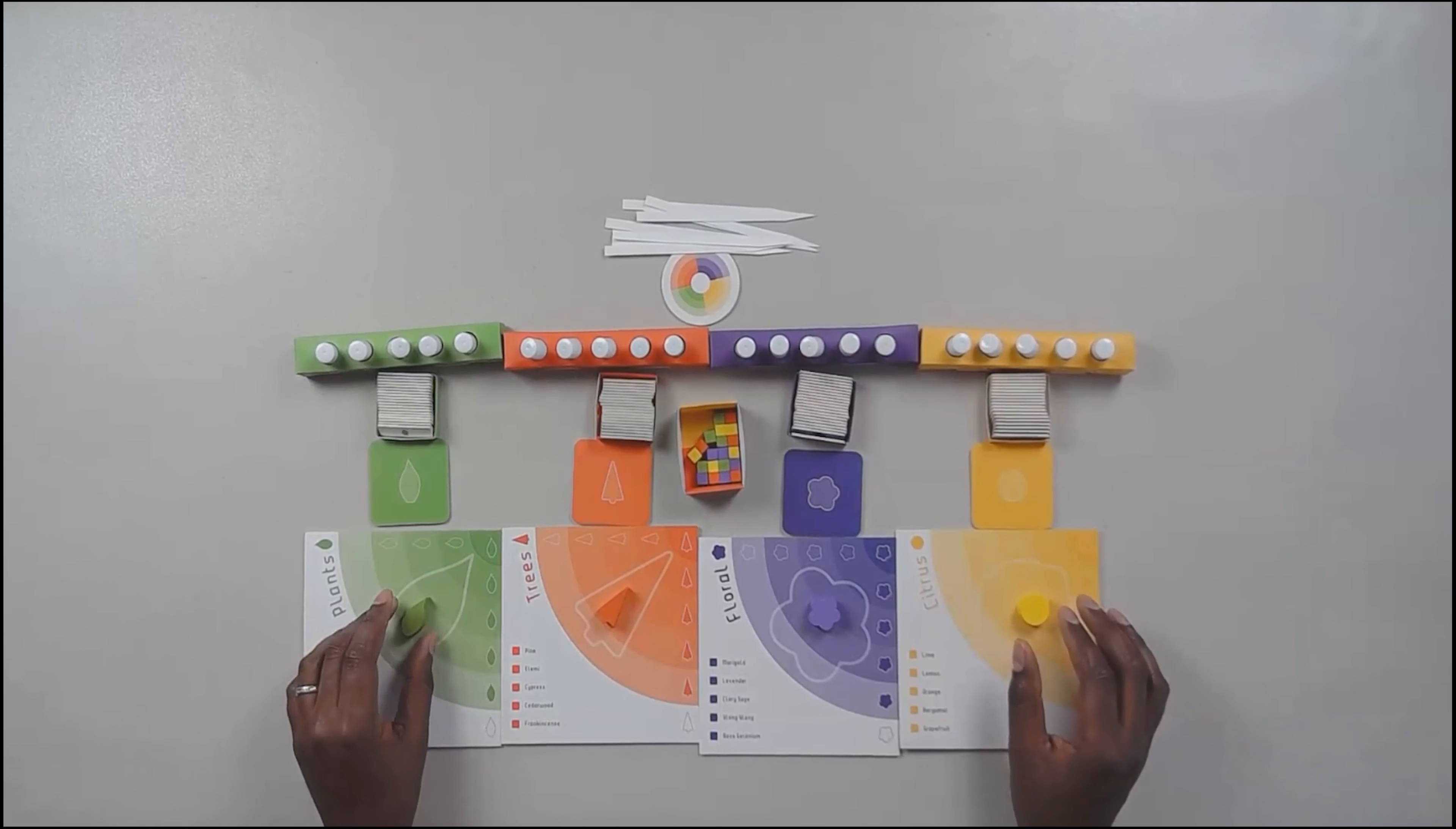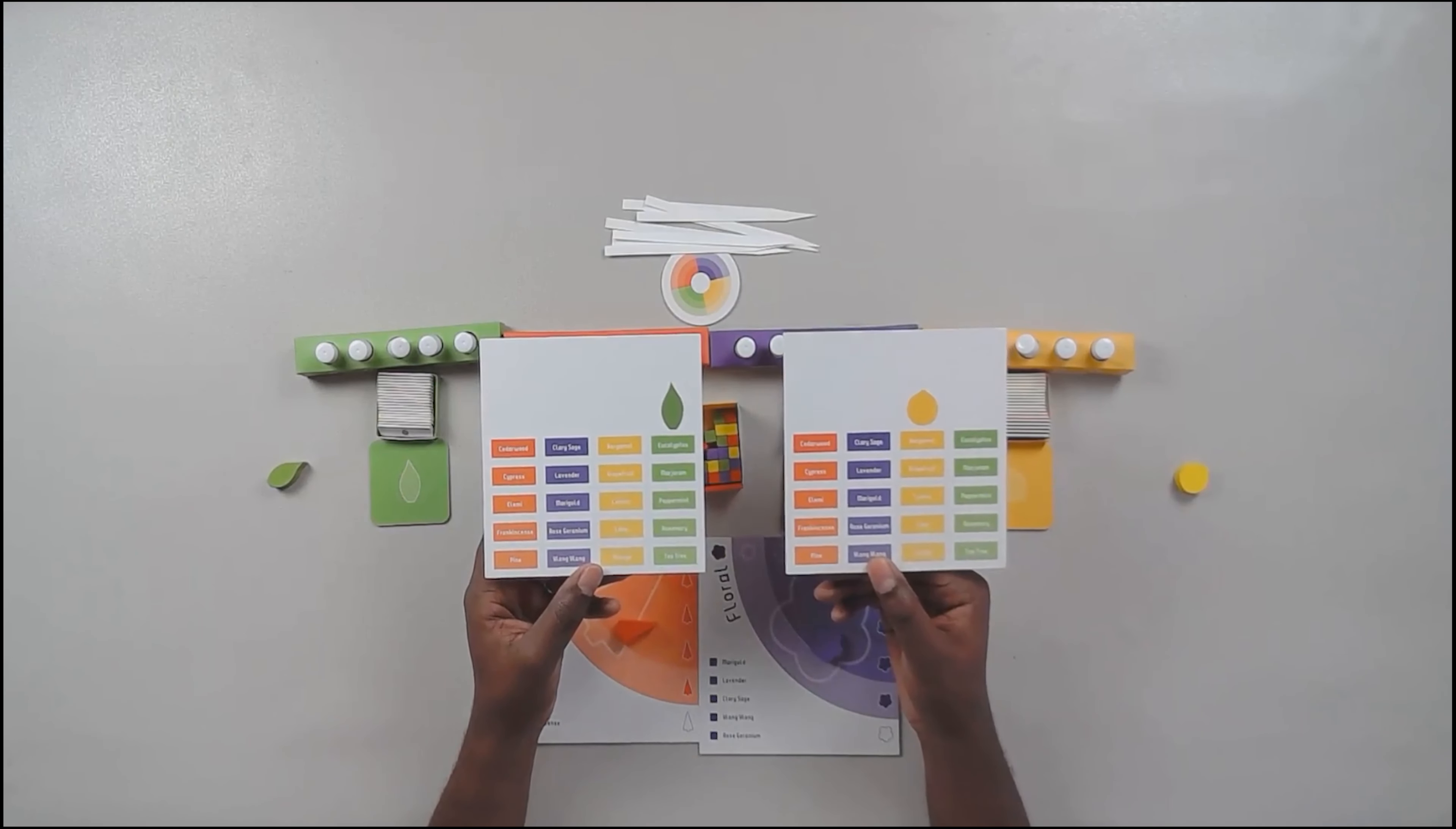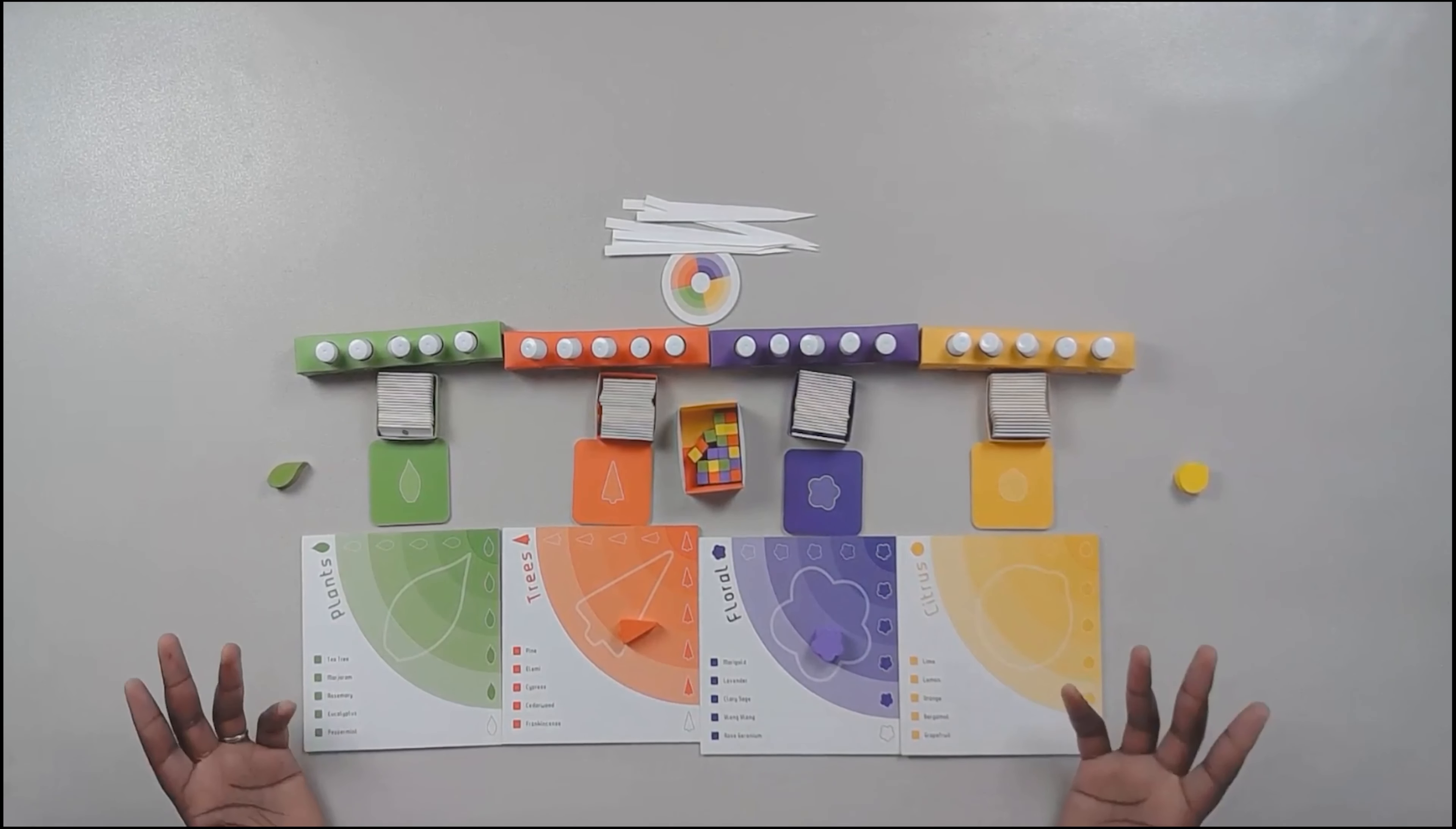And then last but certainly not least, you have these nice wooden tokens in the shape of the various groupings of scented oils. They all have a slightly different back with just their logo on it. And using these components, there are four different types of game modes you can play in Aroma. I'll briefly describe each of them.